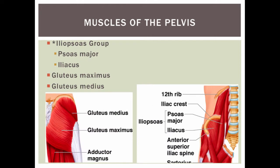Muscles of the pelvis include the iliopsoas group: the psoas major and the iliacus, with its border on the iliac crest, make up the iliopsoas group. Then the gluteus maximus on the posterior side, and right above it would be the gluteus medius. This is an anterior view and a posterior view of the muscles of the pelvis.